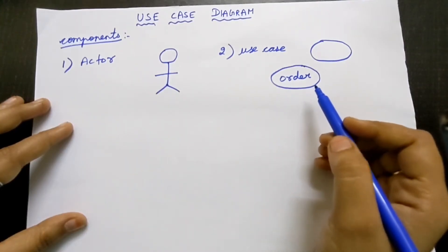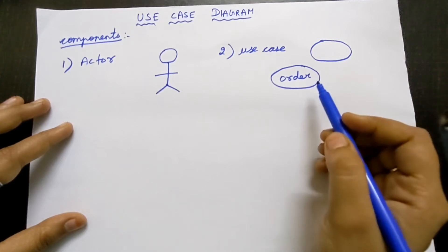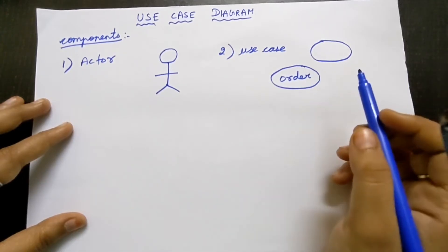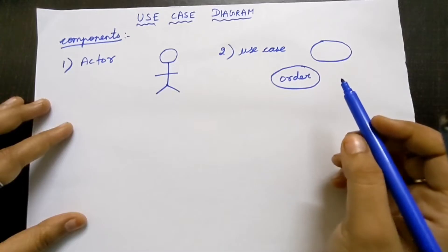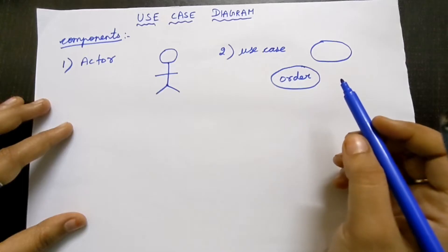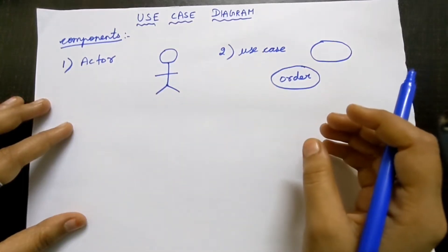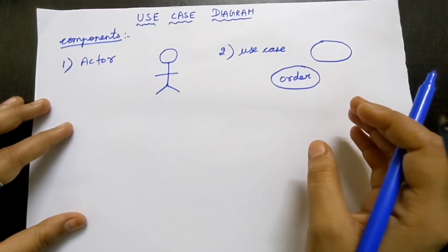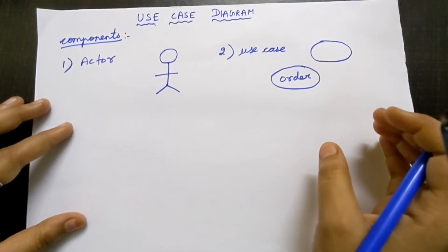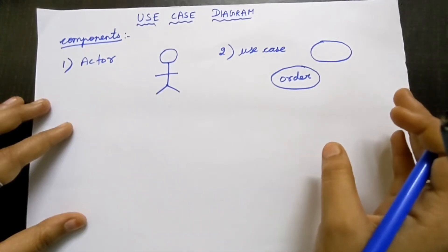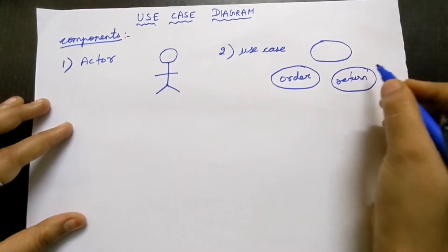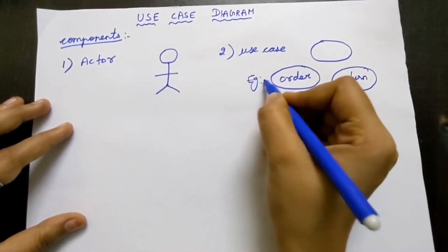For online shopping, ordering alone is not all we do. We can also return goods if not satisfied. For example, if ordered furniture arrives damaged, we can return the product. So 'return' can also be a use case, written inside an ellipse.